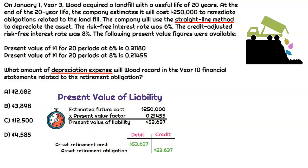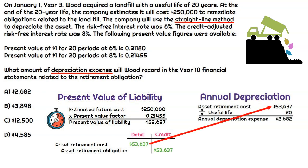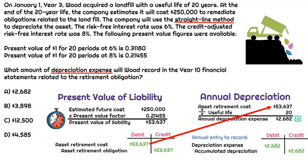Now we have the asset on the balance sheet, and that's what we need to depreciate over the next 20 years. We could create a big table, but since it's straight-line, all we need to do is take that asset retirement cost and divide by 20 years, and that will give us the amount of depreciation expense recorded in each year. When we do that calculation, that ends up being $2,682 of depreciation expense in each period. The journal entry would be a debit to depreciation expense for that amount, and the credit is to accumulated depreciation. Just like any other fixed asset, we have the gross amount and then we add in the accumulated depreciation, and at the end of 20 years it'll have a carrying amount of zero, meaning it's fully depreciated. The correct answer for depreciation expense is $2,682.